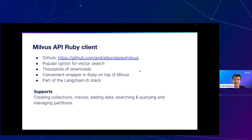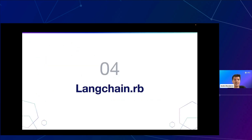If you decide to try Milvus, we have a Ruby API client available at the linked URL. It's a convenient Ruby wrapper on top of Milvus, part of the LangChain.rb stack. It supports managing your Milvus database: creating collections, indexes, adding or removing data, searching, querying, and managing partitions.